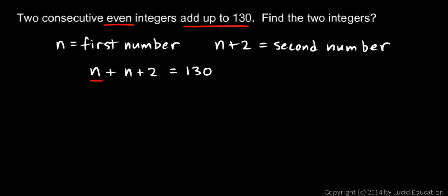And then I take these two n's and I combine them. That's a 2n, so I have 2n plus 2 equals 130.